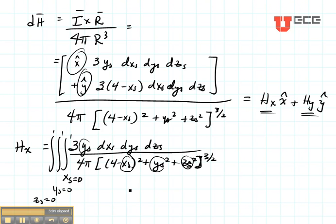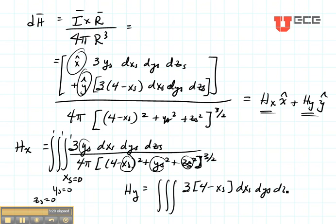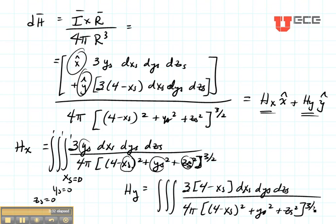Now suppose we had been finding HY instead. HY would be the same triple integral except it would be the term right here in front of the Y. It would be 3 times (4 minus XS) DXS DYS DZS, all over 4π times [(4 minus XS)² plus YS² plus ZS²] all to the 3/2 power.